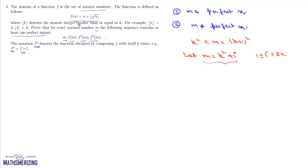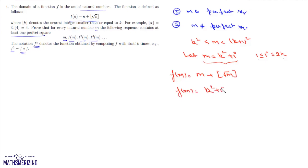Now we compute f(m). Since f(m) = m + floor(√m), and m = k² + i, the square root of m lies between k and k+1, so floor(√m) = k. Therefore f(m) = k² + i + k = k² + k + i.